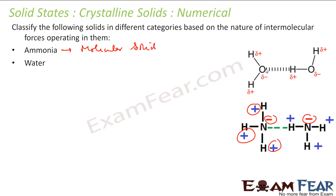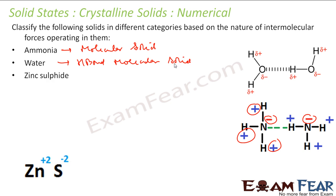Water is pretty clear — there is a slightly negative charge on oxygen and slightly positive charge on hydrogen, with a hydrogen bond between oxygen and hydrogen. So water is also a hydrogen bond molecular solid. Zinc sulfide has Zn²⁺ and S²⁻, which are ions, so it is an ionic solid.